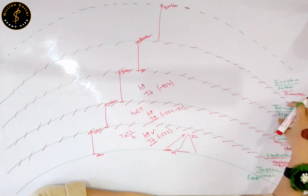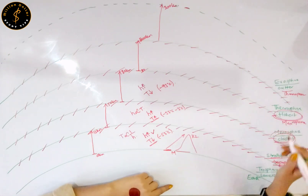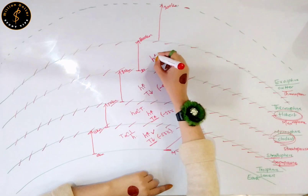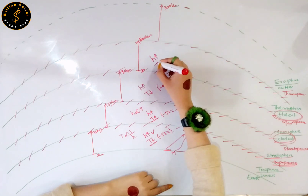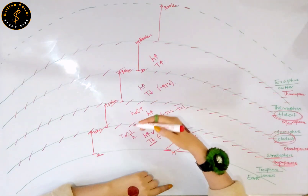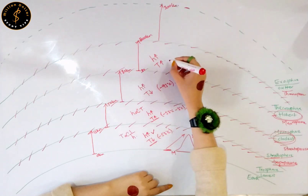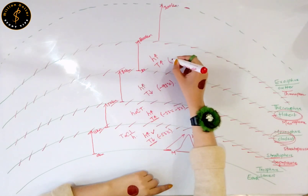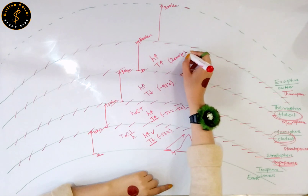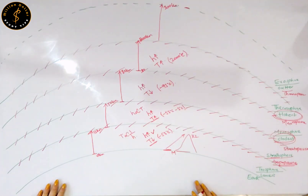In your thermosphere, this is the hottest layer of your planet Earth. With the increase in height, the temperature will definitely increase — the higher you go, the hotter it gets — up to 2,000 degrees centigrade.